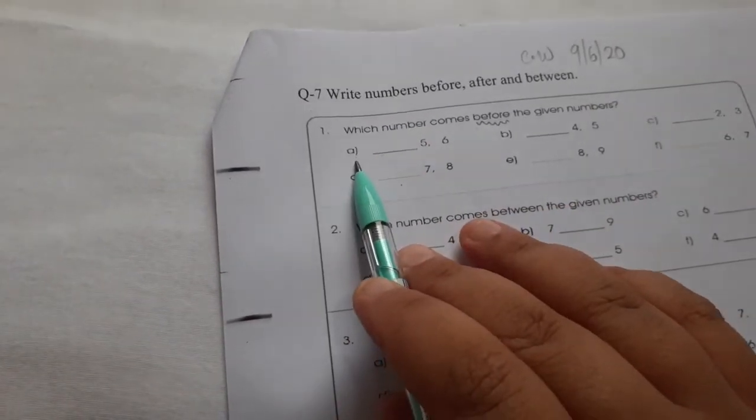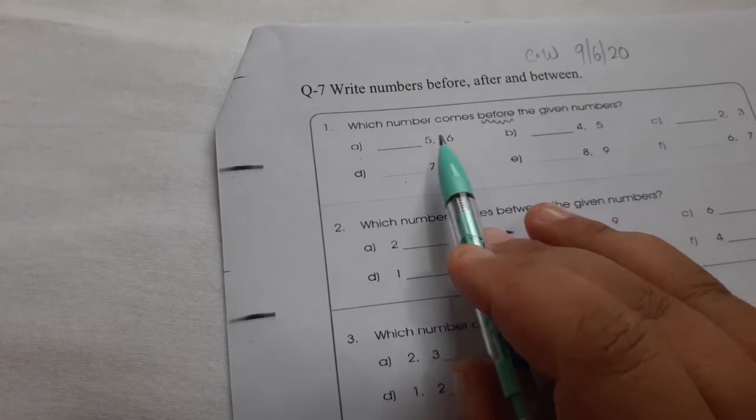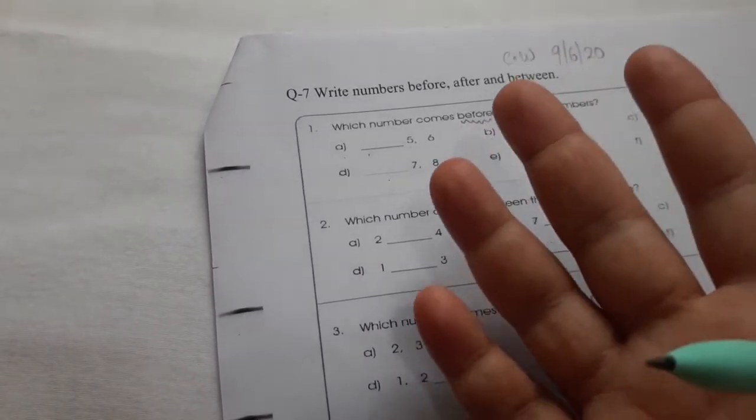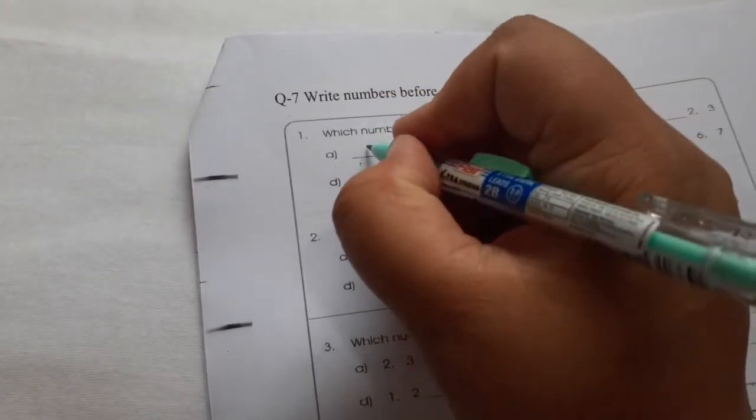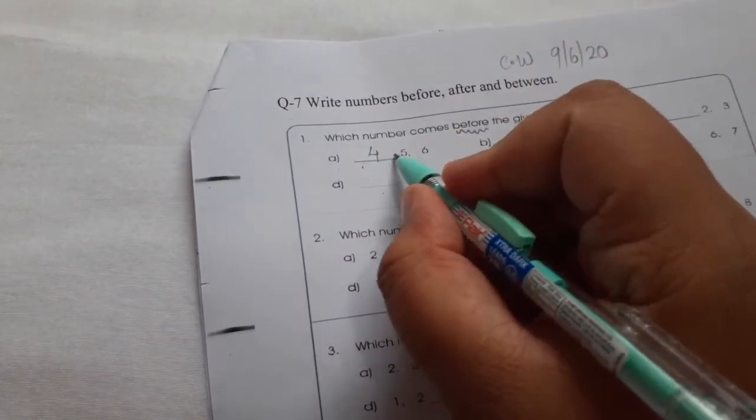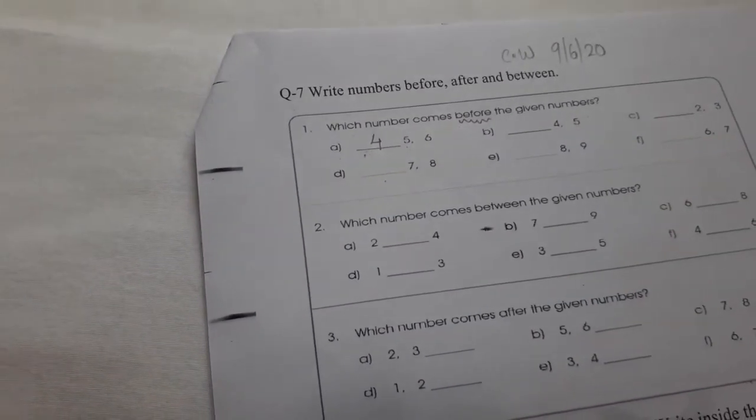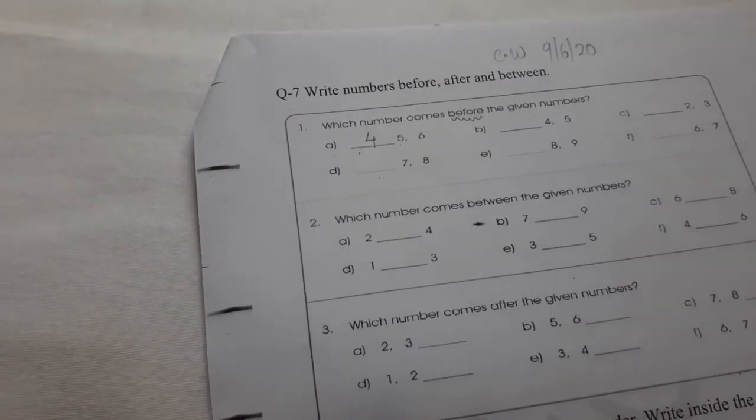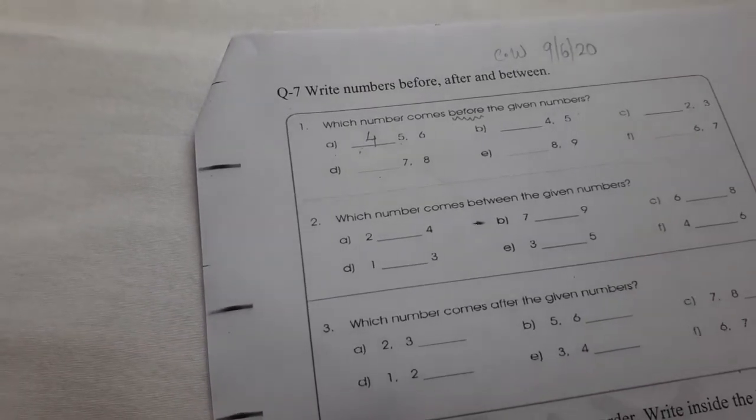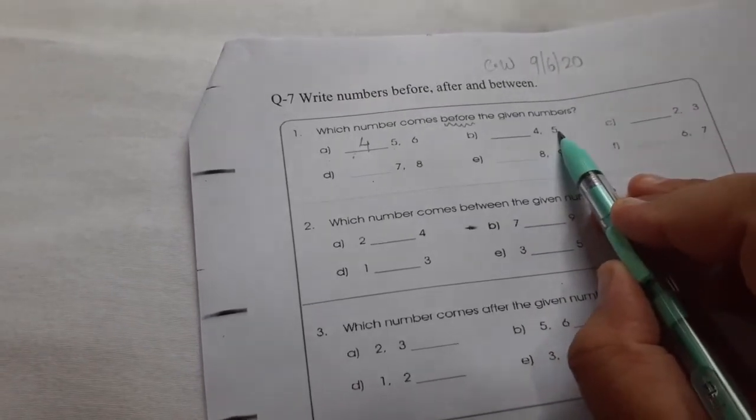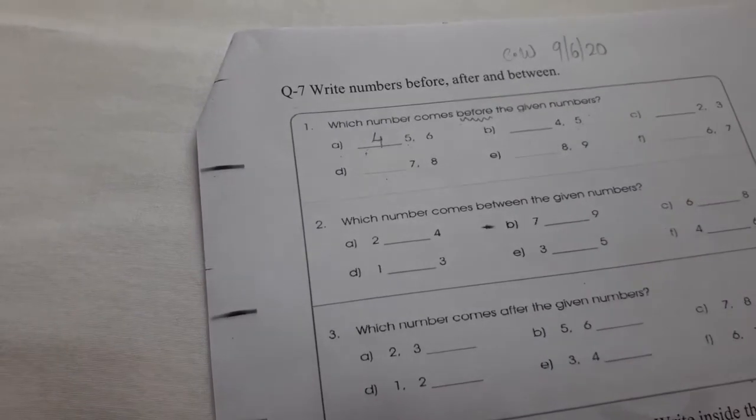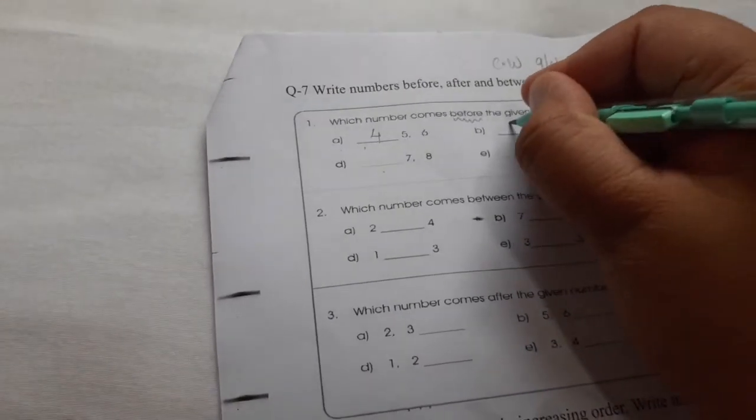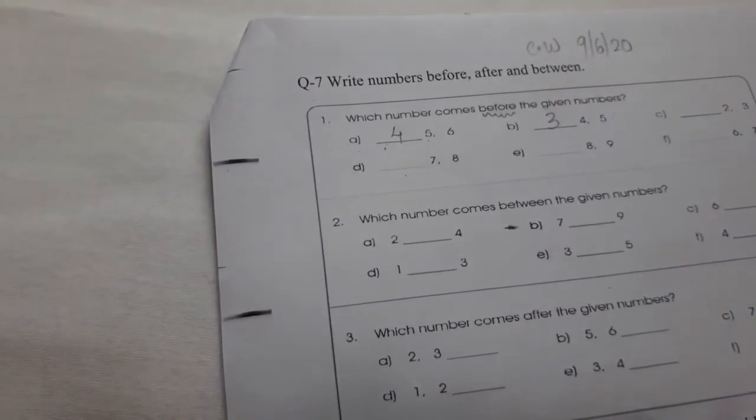Let us go to question number 1, dash 5, 6, what comes before 5 and 6? 1, 2, 3, 4, 5, 6, so 4. B is dash 4 and 5, what comes before 4 and 5? 1, 2, 3, 4, 5, so 3. So write down 3, 4 and 5.